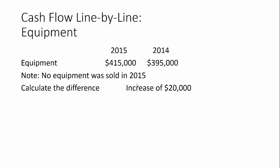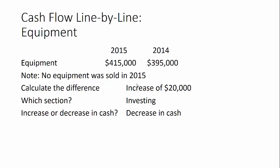The next thing to think about is which section this goes in on the cash flow statement. Purchasing equipment is an investment by the business — they're investing in new long-term assets in order to increase revenue — so this goes in the investing section. Now think about the effect on cash: if you buy a piece of equipment, your cash goes down, so this will result in a decrease in cash.